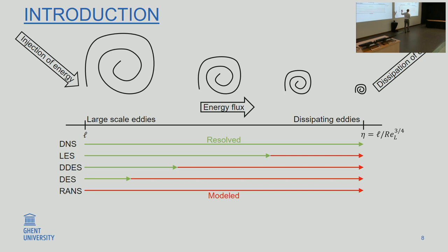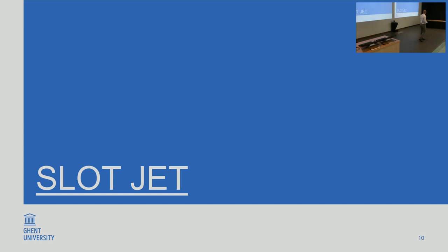Probably you're familiar with things like this. In DNS you resolve all the scales, from large to small. In RANS you model all of it, and LES and hybrid methods like detached eddy simulation are somewhere in between, where you model part of the turbulence and really resolve part of it as well.